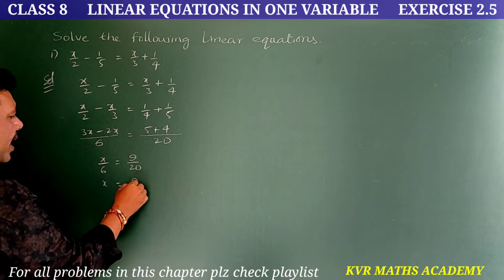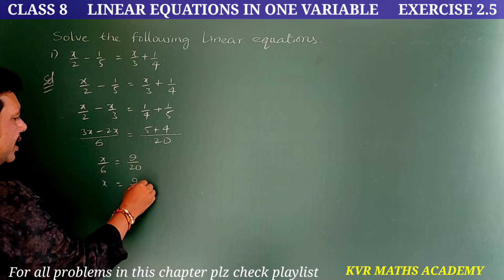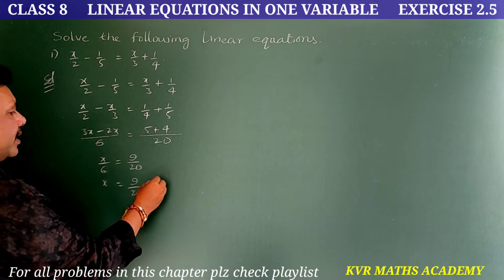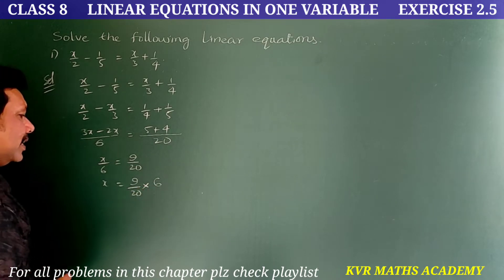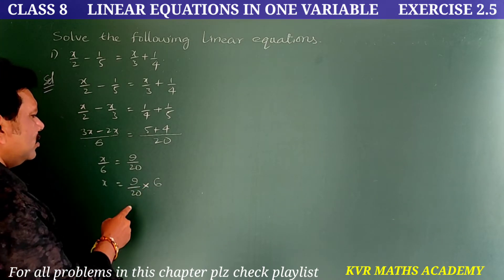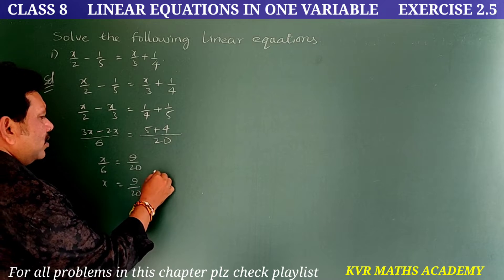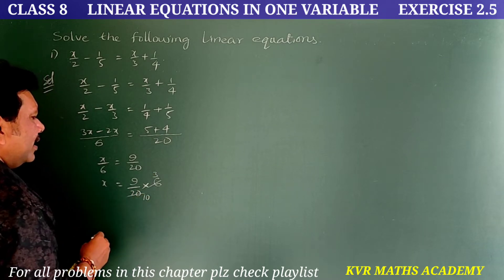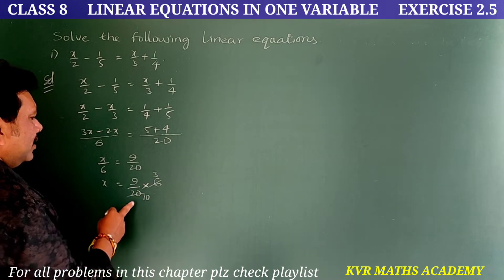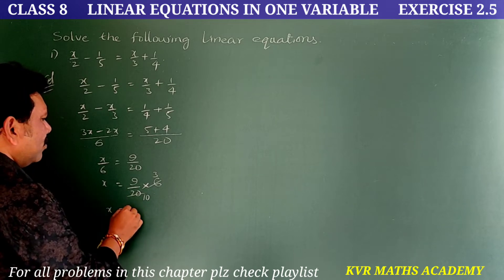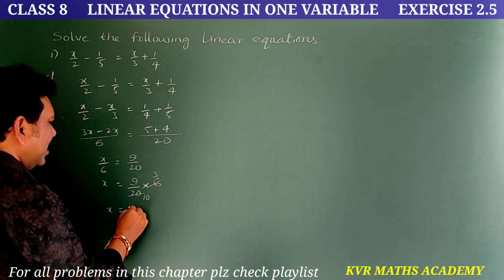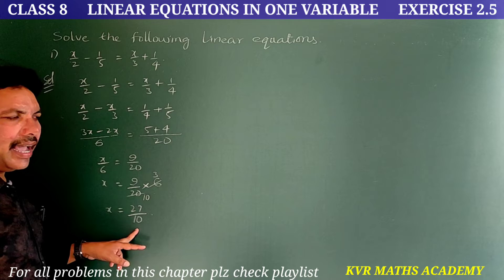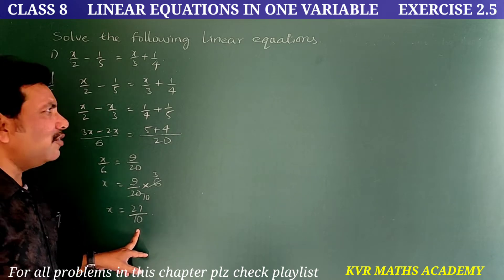Therefore x = 9/20 × 6. Cancelling: 3 twos are 6, 10 threes cancel, so x = 9 × 3 / 10 = 27/10. So x = 27/10.